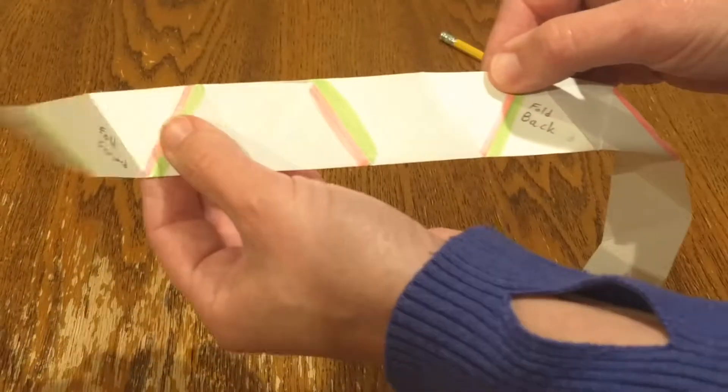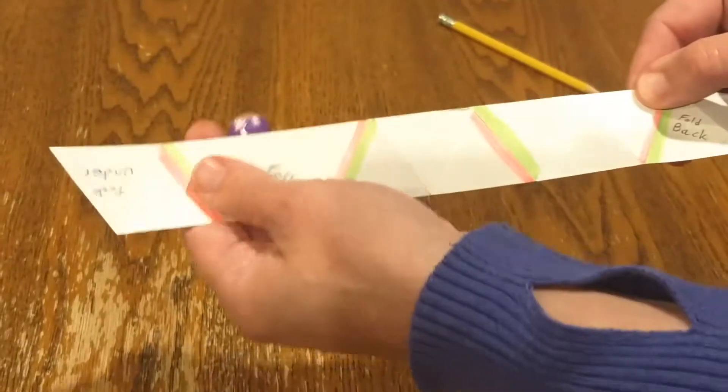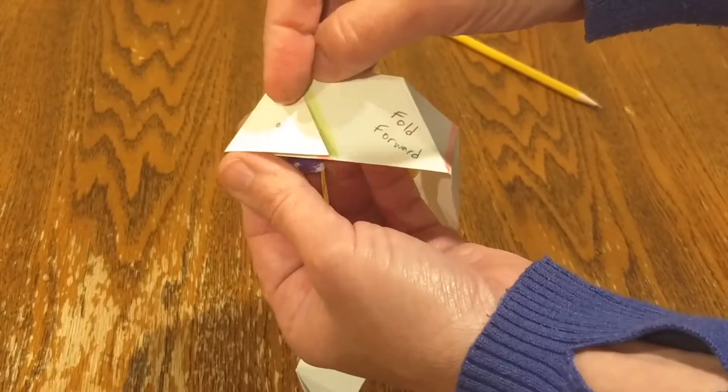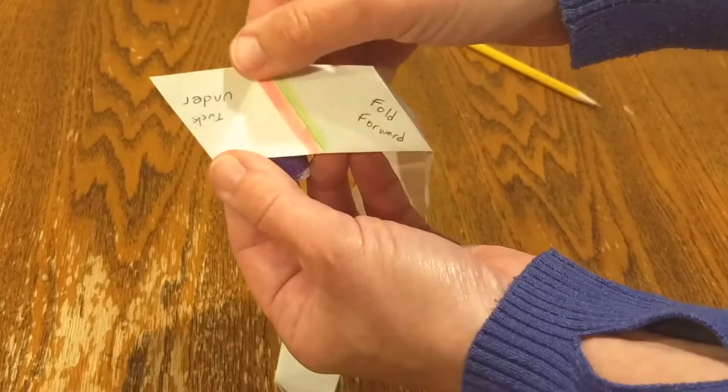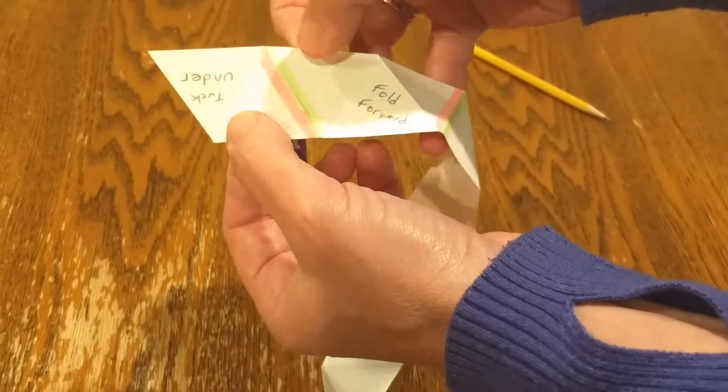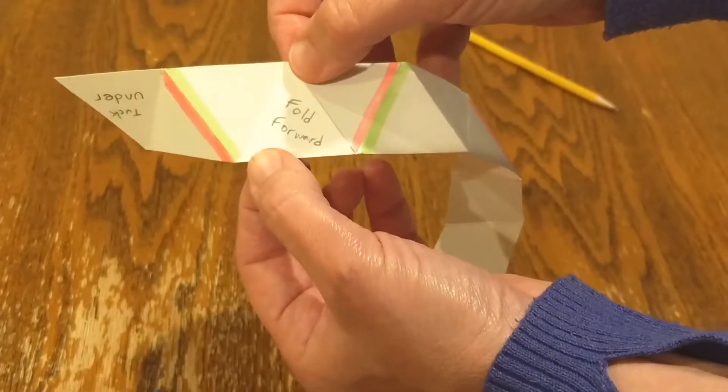And then going to the other end, this one is labeled upside down, tuck under, and on the back of it, it also has a dot. Then counting in, 1, 2, 3, 4, this one says fold forward.